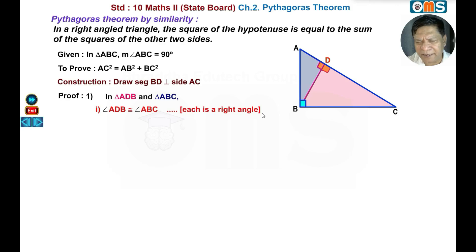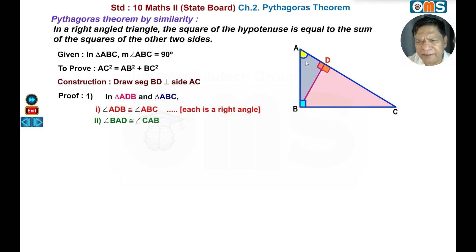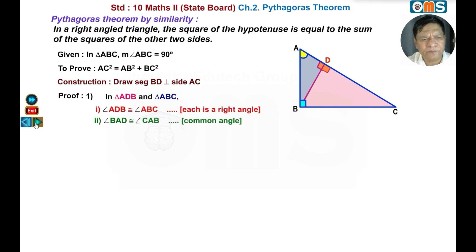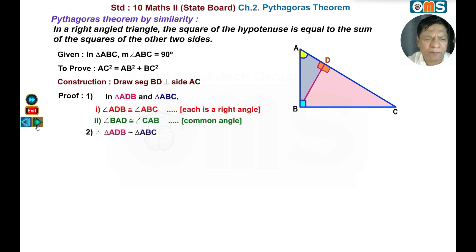Each angle is 90 degrees. Angle BAD is congruent to angle CAB — that is, angle A is the same common angle. Two angles are equal, so by the AA test of similarity, triangle ADB is similar to triangle ABC.